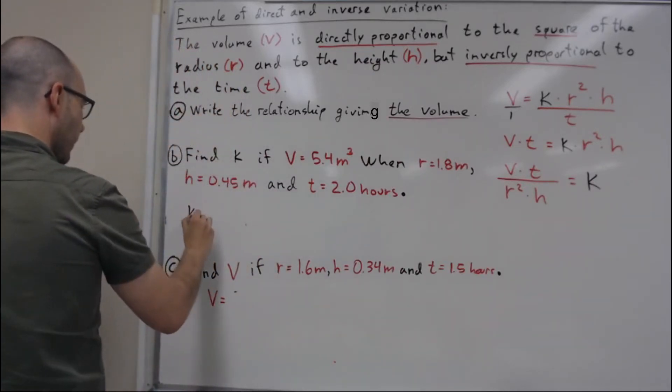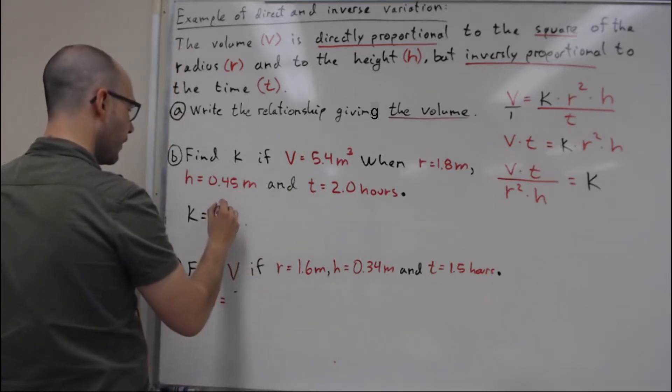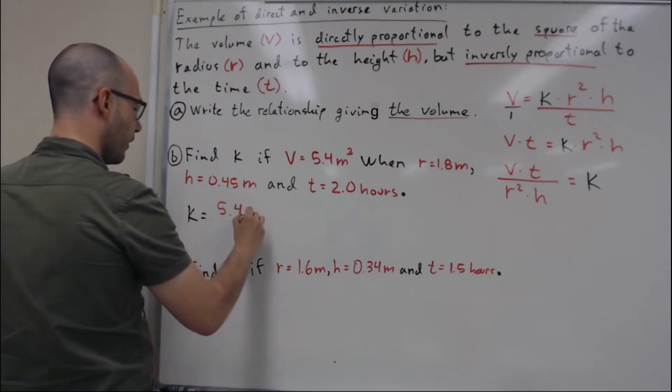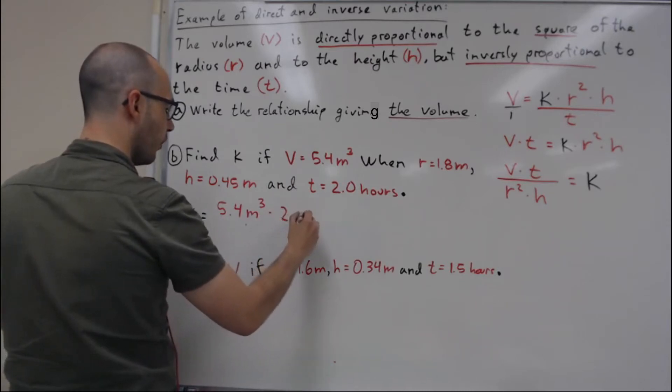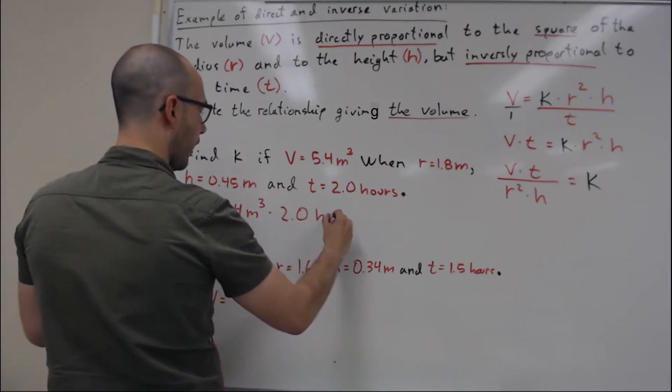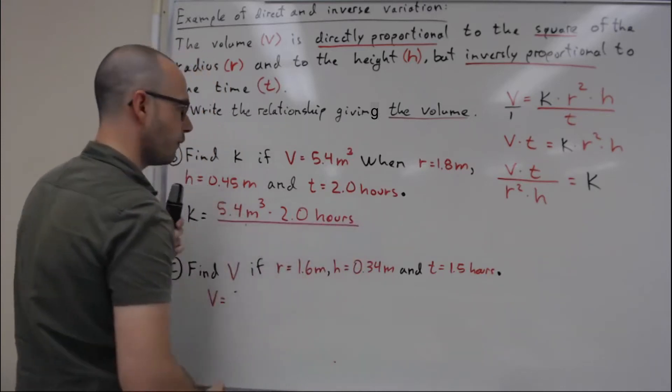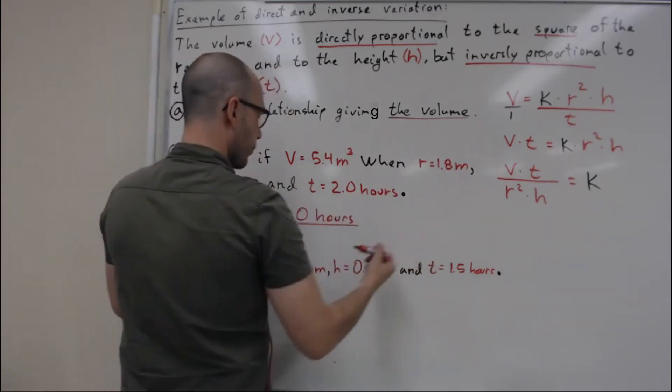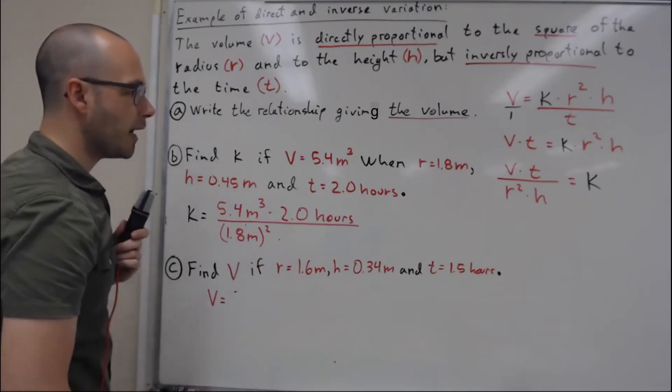So now that I've isolated my k, I will plug in my values. My k is going to be equal to, I will plug in my value for V, it's going to be 5.4 meter cubed multiplied by my t which is 2.0 hours.